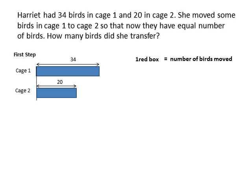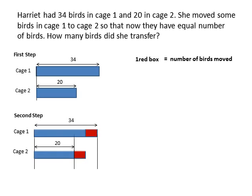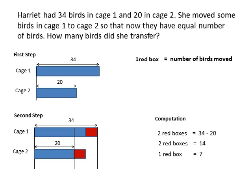We moved some of the birds, so we represent that with the red box. For step two, that's when we do the moving. We draw a red box over the 34 and then add it on the 20. Look carefully at the second step and make sure you understand the diagram. Then do the computation: two boxes equals 34 minus 20, so two boxes equal 14, and one box equals 7.